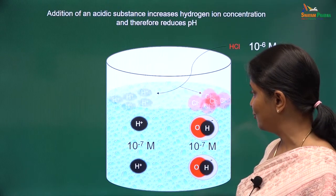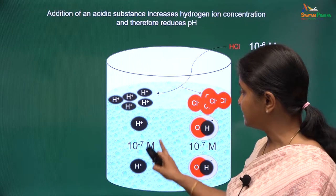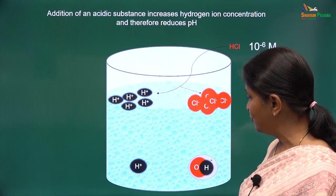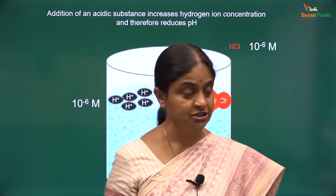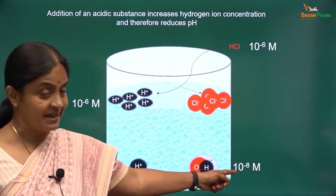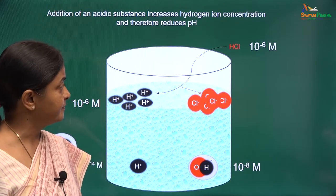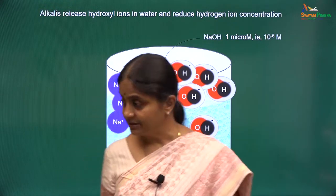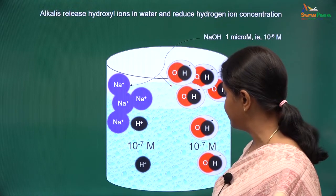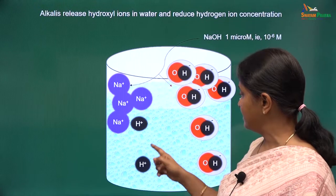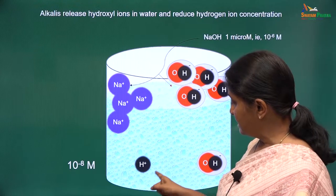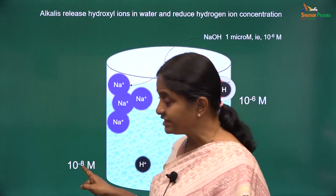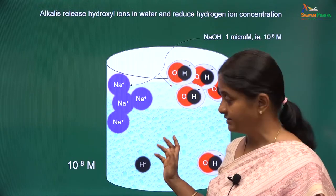Say we have added hydrochloric acid to a liter of water — it ionizes to give protons and chloride ions. Since the hydrogen ion concentration has gone up, some of the ionized water molecules will move to the stable state, and the new concentrations of protons and hydroxyl ions will be such that the product remains 10 to the power minus 14. If you add sodium hydroxide, it ionizes to give sodium and hydroxyl ions. Hydroxyl ion concentration goes up, some ionized water molecules move to the stable state, and the hydrogen ion concentration is reduced from 10 to the power minus 7 molar to 10 to the power minus 8 molar. The pH now is 8.